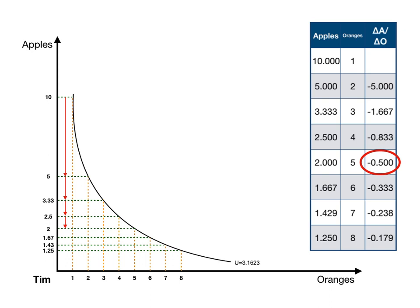How much Tim is willing to give up of apples for an additional orange is diminishing in the number of oranges he has. Part of that is diminishing marginal utility — the more apples he has, the less utility an additional unit gives him. Therefore, he's willing to give up a lot of those apples for an additional orange.